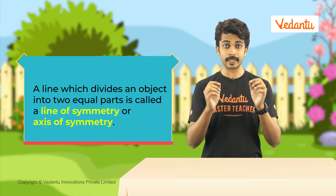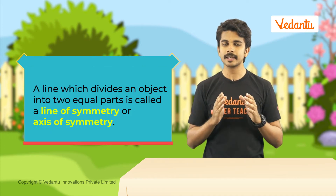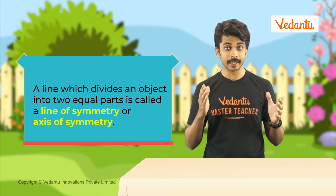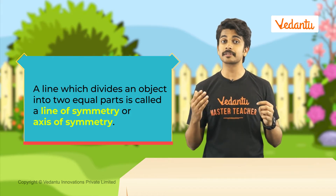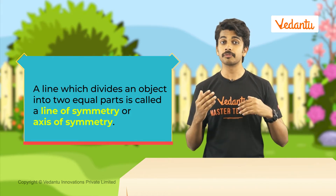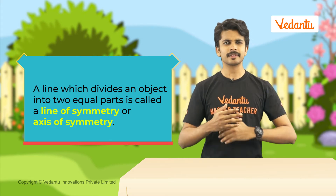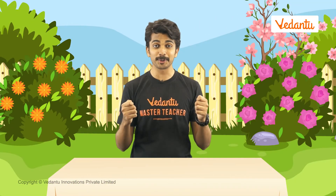A line which divides an object into two equal parts is called a line of symmetry, and the object will be symmetrical about this axis of symmetry. There are a lot of objects in nature which follow the rules of symmetry. Can you think of a few?